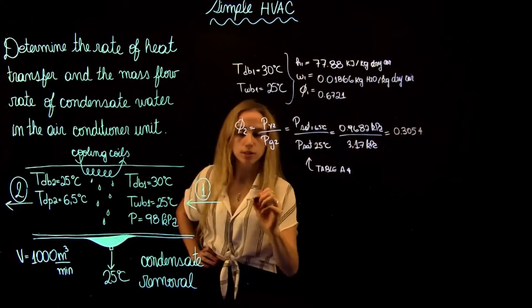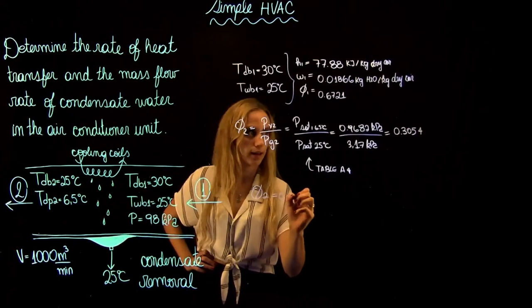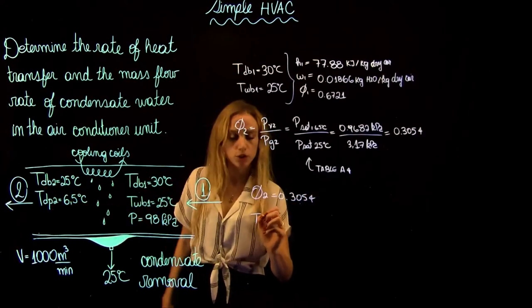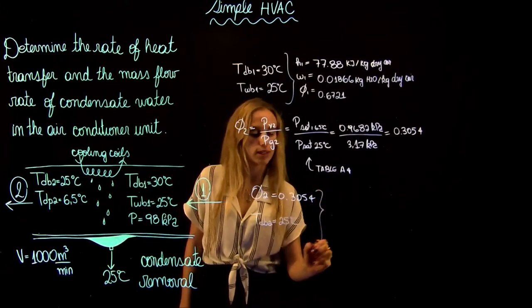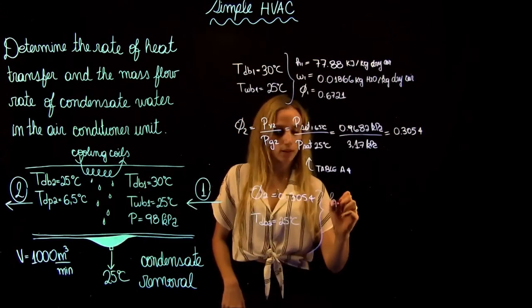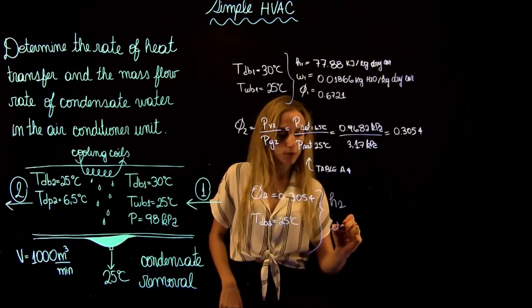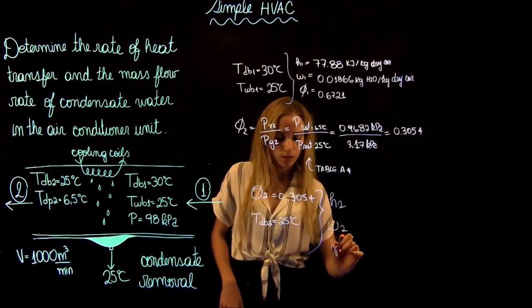By using the relative humidity at 2, which we just found, and the dry bulb temperature, which is given as 25 degrees Celsius, we can go to the psychometric chart because we have two values. Find the enthalpy at 2, the absolute humidity, and the specific volume.